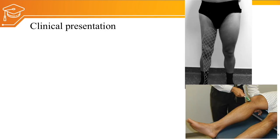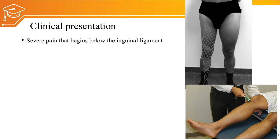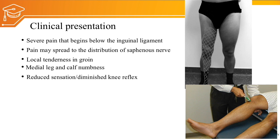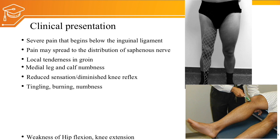Clinical presentations of femoral nerve injury include: severe pain beginning below the inguinal ligament, which may spread to the distribution of the saphenous nerve; local tenderness in the groin region; medial leg and calf numbness; reduced sensation; diminished knee reflex — as the knee reflex is supplied by the femoral nerve; and tingling, burning, and numbness experienced by the patient.